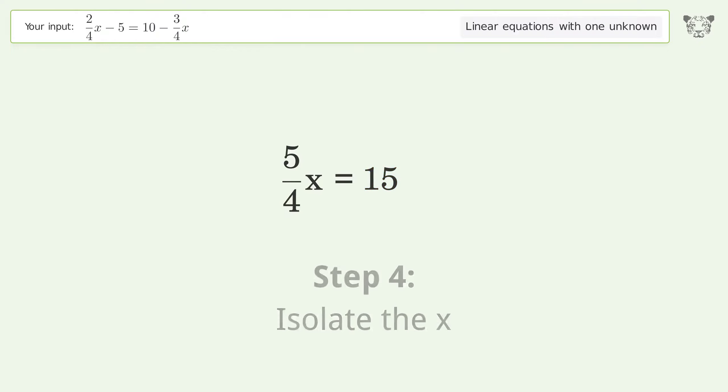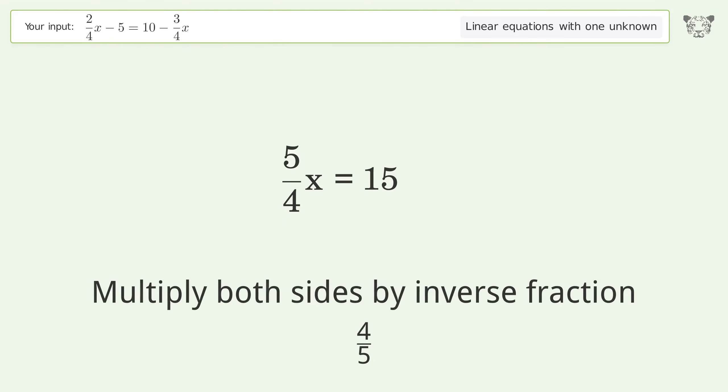Isolate the x. Multiply both sides by inverse fraction 4 over 5.